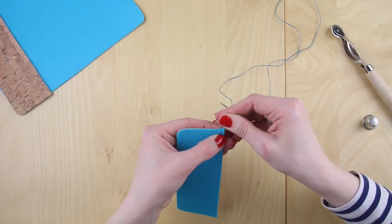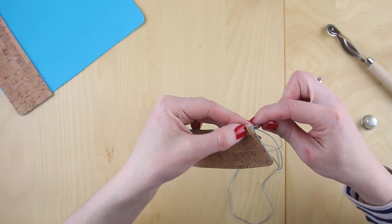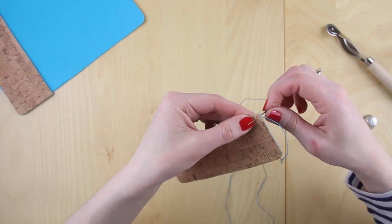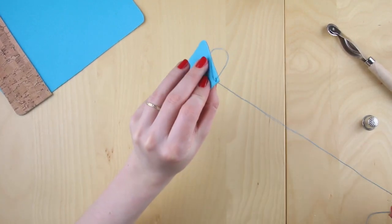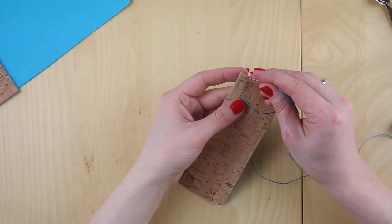And we're going to do a run of back stitch down the front of the cork. So if you haven't done this before you begin by sewing in through the second hole down. Get that wee wiggle through.